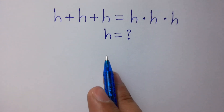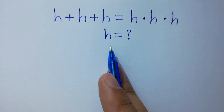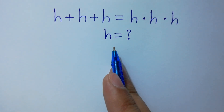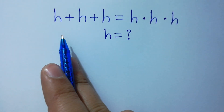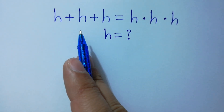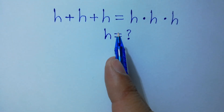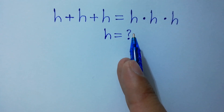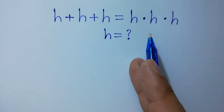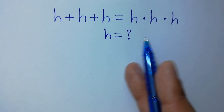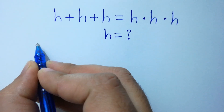Hello friends, find the value of h if h plus h plus h equals h times h times h. Let's have a solution.